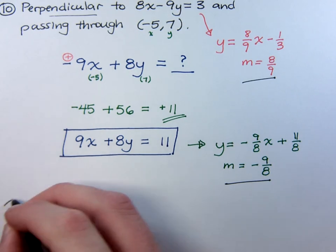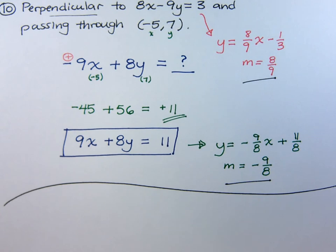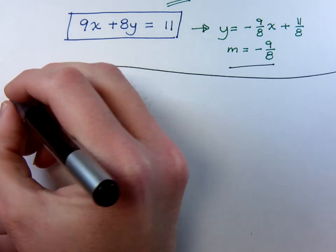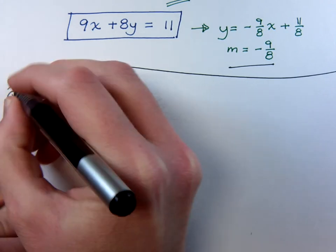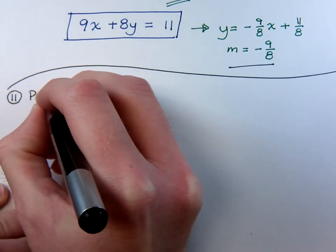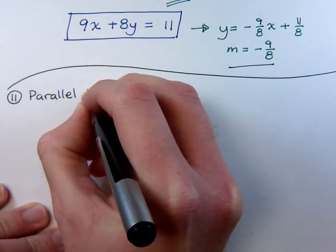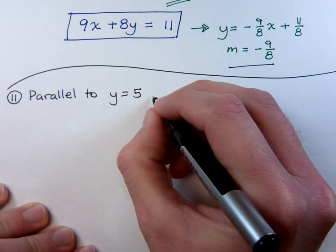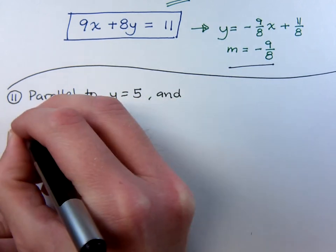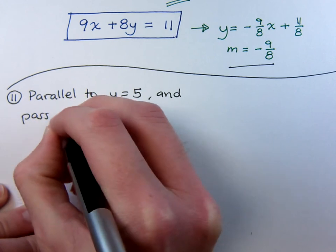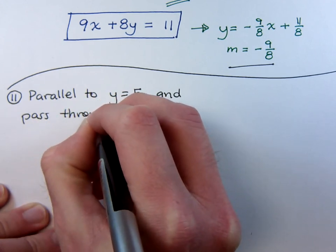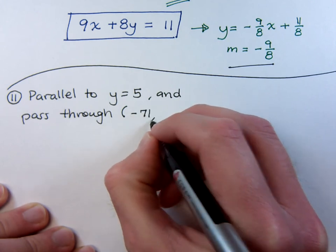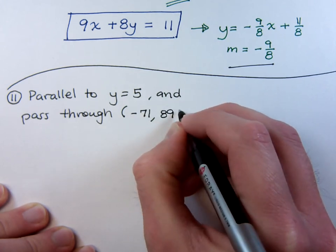All right, now let's do a couple more quick little guys right here. Not related to the standard form and all that jazz, but let's do something a little bit easier. Suppose I say I want to be parallel to the line y equals 5, and I want to pass through the point negative 71, 89.